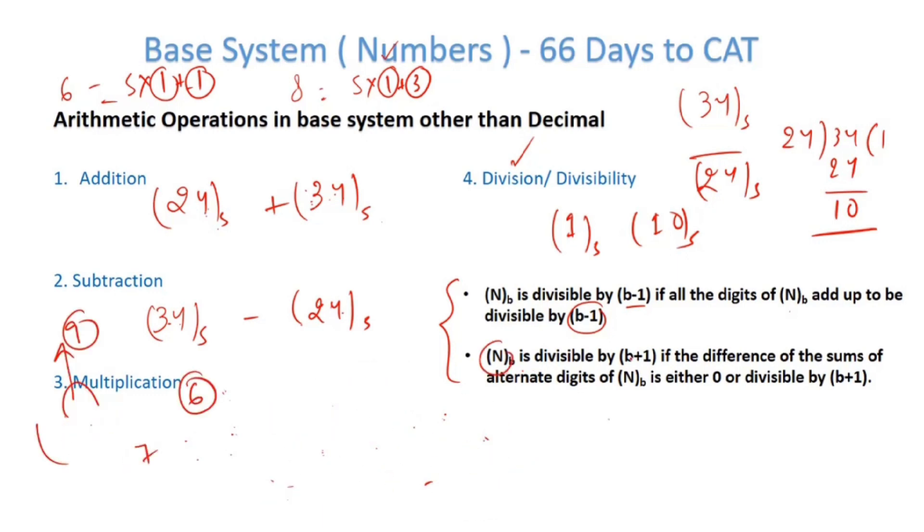So one more important aspect here. A number in base B is divisible by B plus 1 if the difference of the sums of alternate digits is either 0 or divisible by B plus 1. So this is like divisibility of 11. This number ABCD is in decimal system 10. Or let me take another example 1331. So in decimal system, what is the divisibility rule of 11? We add the alternate digits and we take the difference. If the difference is either 0 or divisible by 11, then the number is divisible by 11. Similarly, in any other base system also.